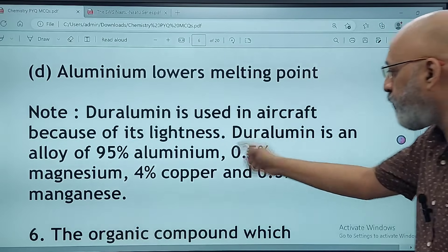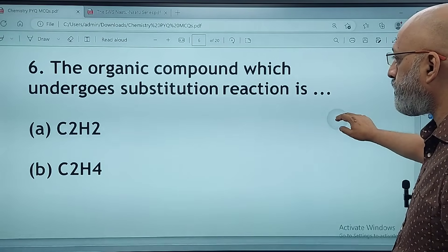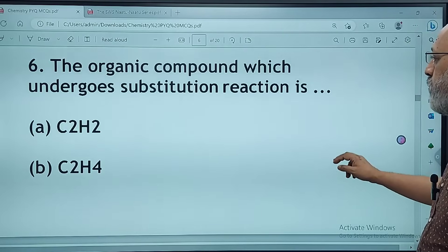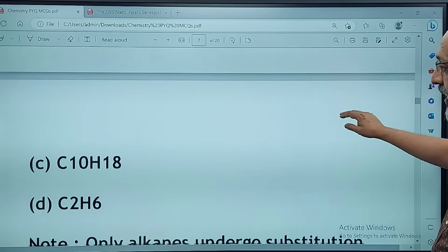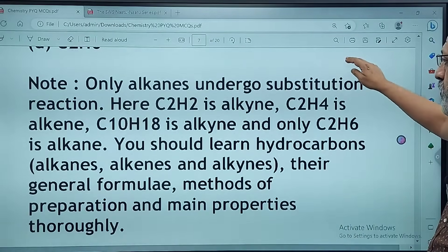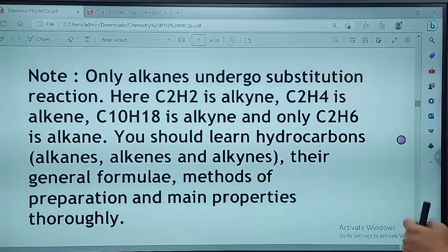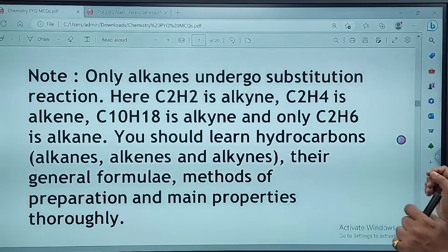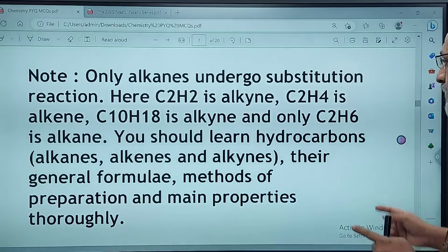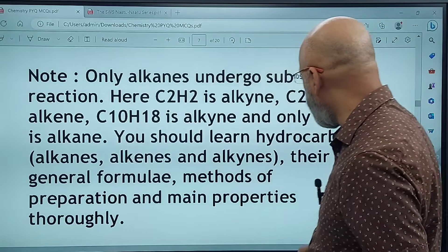The organic compound which undergoes substitution reaction is C2H2, C2H4, C10H18, or C2H6. The correct answer is D, C2H6. Only alkanes undergo substitution reaction. C2H2 is alkyne, C2H4 is alkene, C10H18 is alkyne again, and only C2H6 is alkane. You should learn hydrocarbons, their general formulas, methods of preparation, and main properties thoroughly.